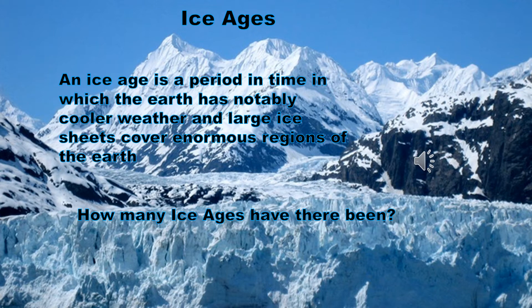An ice age is a period in time in which the Earth has notably cooler weather and large ice sheets cover enormous regions of the Earth. There have been at least five major ice ages in the Earth's history. We are currently in an interglacial period in which we are experiencing warmer temperatures.